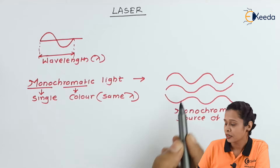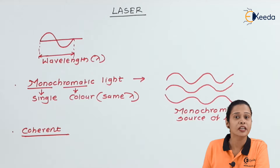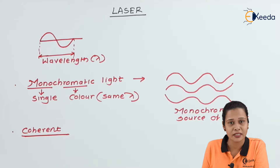But we can see the phase is not the same. So we have a second term, that is coherent. Coherent means if the waves are traveling with the same phase, or no phase difference, then we can say this is a coherent source of light.